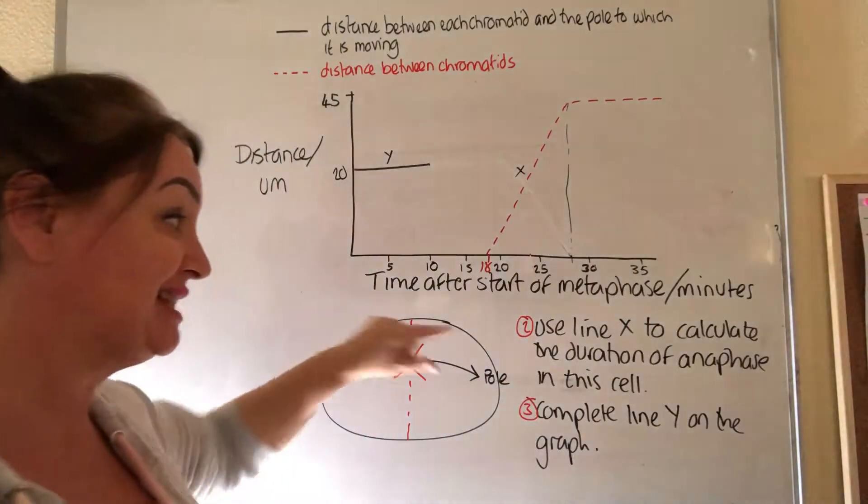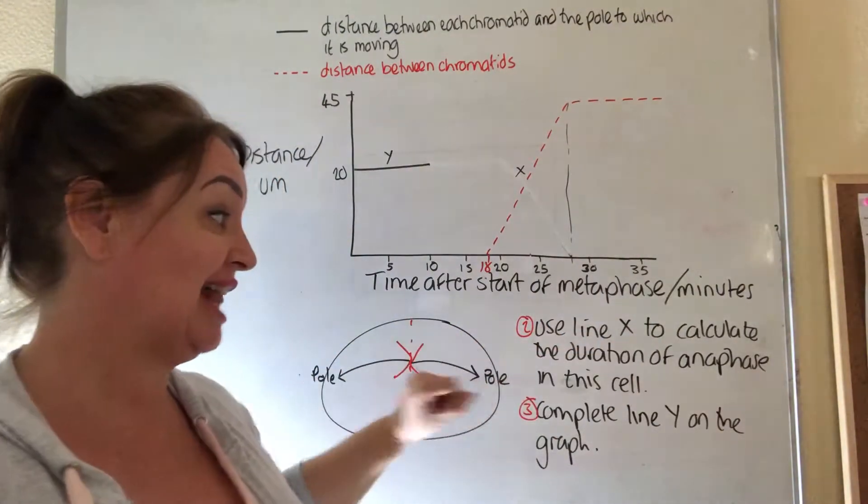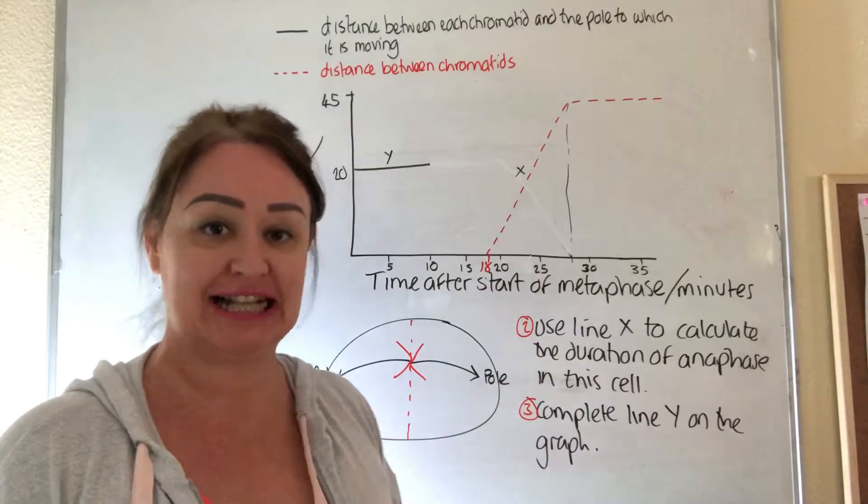Okay, the second part of this question asks, use line X to calculate the duration of anaphase in this cell.